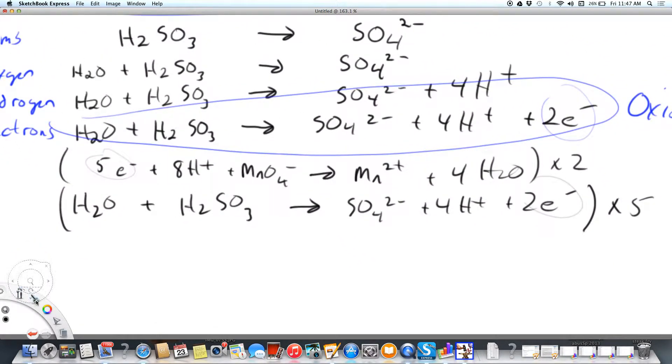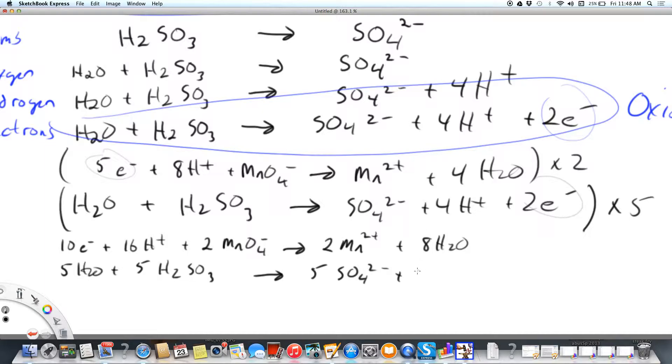So I'm going to multiply the top by two. That gives me ten electrons, sixteen hydrogens, two permanganate ions, two manganese ions, and eight water molecules. The second reaction, everything is times five, so that's going to be five water molecules plus five sulfurous acid molecules and five sulfate ions plus five times four is twenty hydrogen ions plus ten electrons.